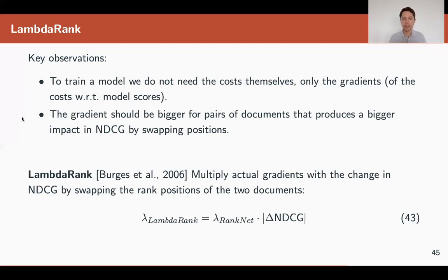So what can we do? We actually can still use those lambdas from the pairwise approach, those lambdas that push documents up and down according to the optimal position. But we do not multiply them anymore by the derivatives. We just multiply them by the differences in the desired metric.